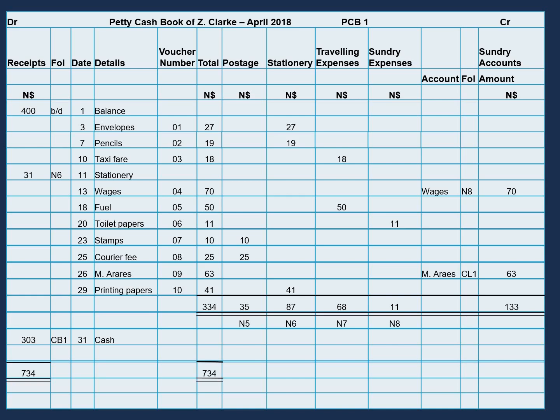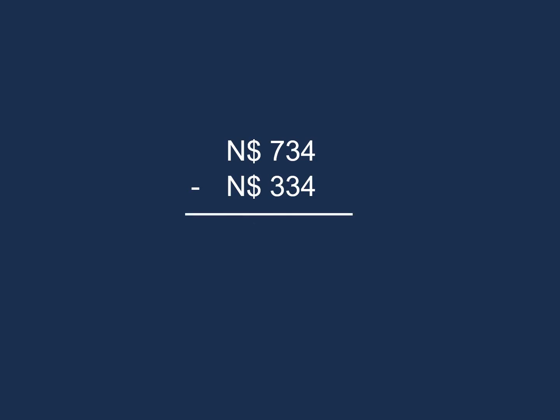We get our closing balance by doing the following. We take the $734 we just calculated and we subtract that by the $334, which is the amount in our total column. And then we get our $400, which will be our closing balance.